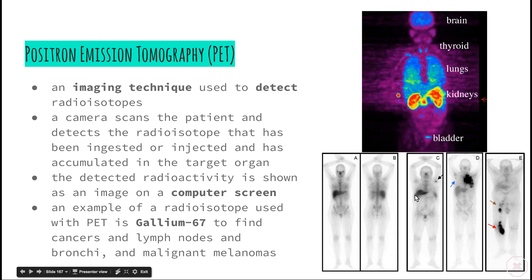Here we can see the liver and lymph nodes — this would likely be looking for cancerous tissues in the lymph nodes. Another image shows a lung that appears affected in some way, and a bone structure in the last image. We can clearly see that the introduction of the radioisotope has made those organs really visible on the scans.